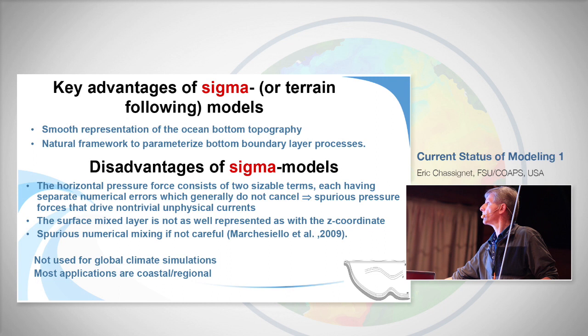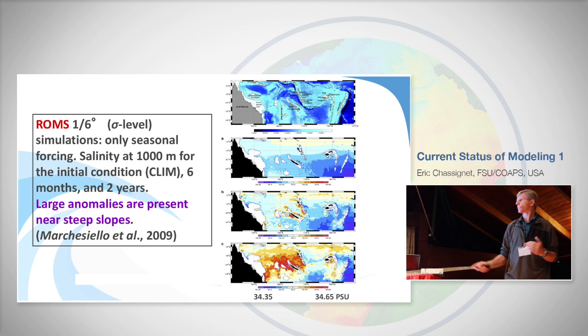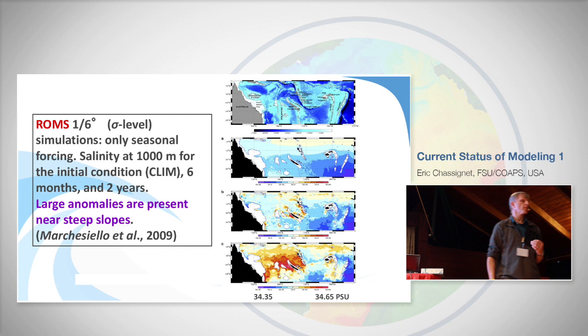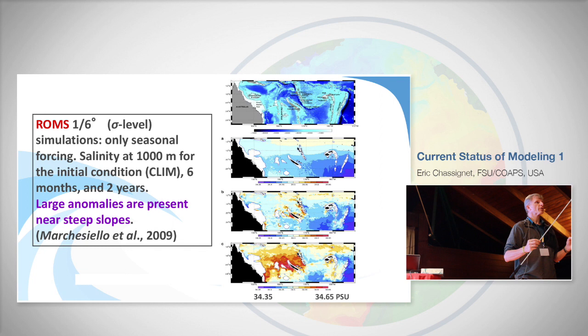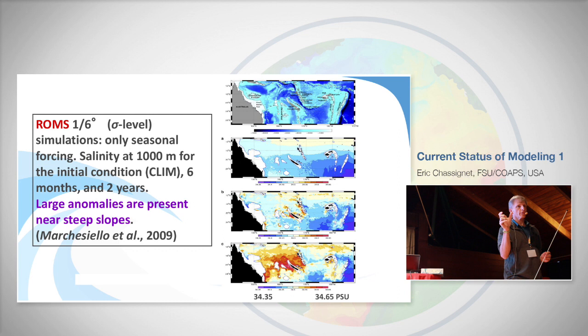Here is an example involving ROMS and spurious diapycnal mixing, shown by Patrick Marchesiello. If you start with climatology, run for six months, and see how much salinity has evolved away from climatology, the reason for this drift is the advection scheme used, which has an implicit viscosity or diffusion that moves tracers from one isopycnal to the next. One way to fix it — as they did in a subsequent paper — is to separate the advection from the numerical dissipation by rotating the tensor, which minimizes that aspect.